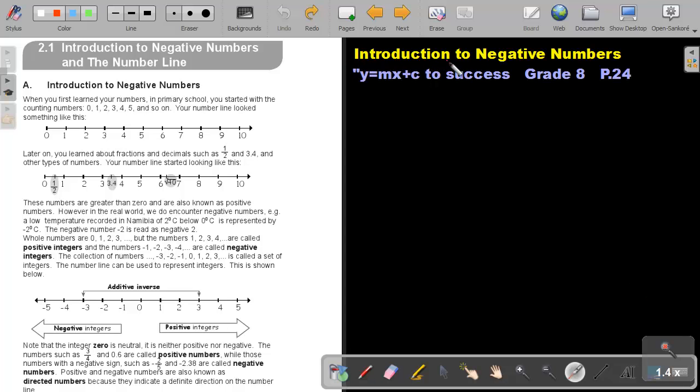Part 1. Introduction to Negative Numbers. You will find this on page 24 in the Namibian Mathematics Grade 8 textbook, Y equals MX plus C to success.